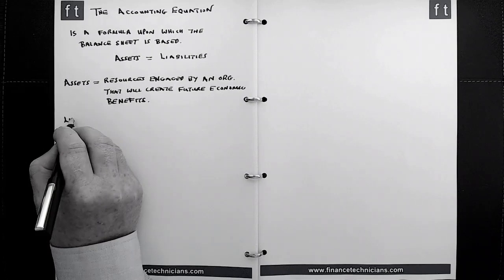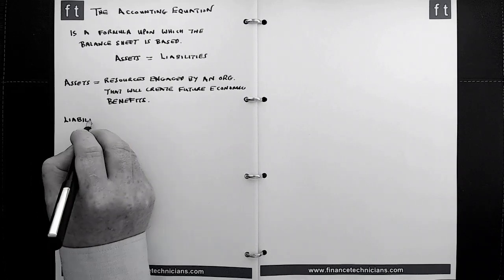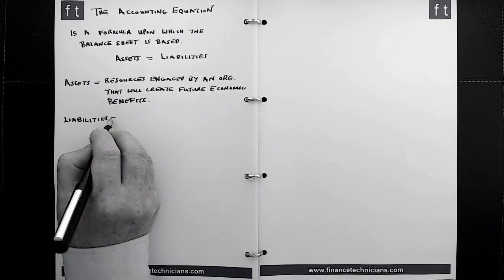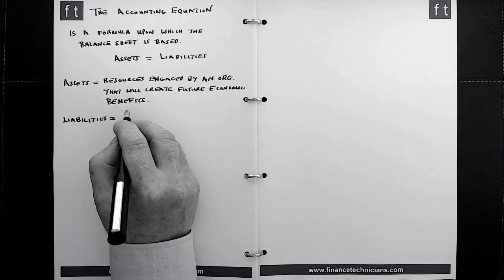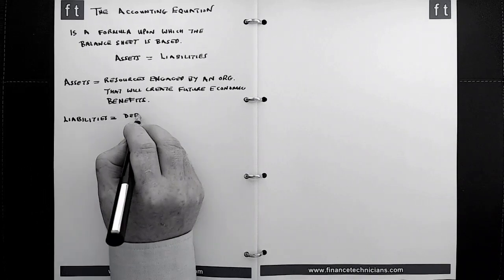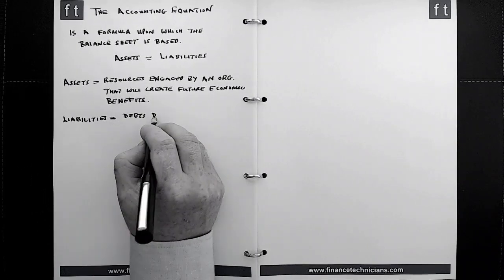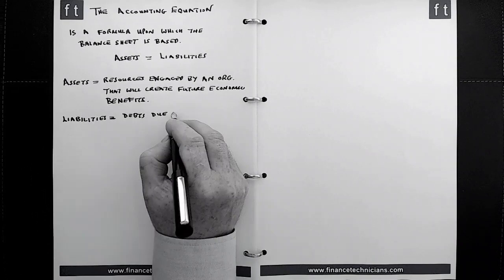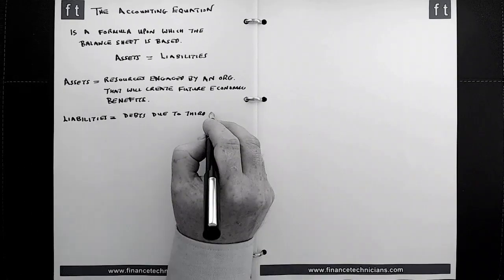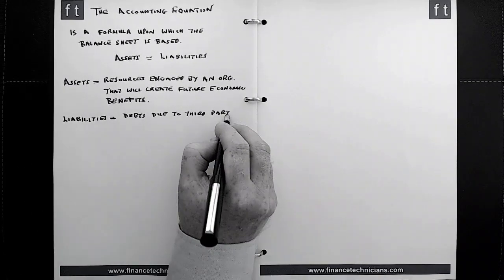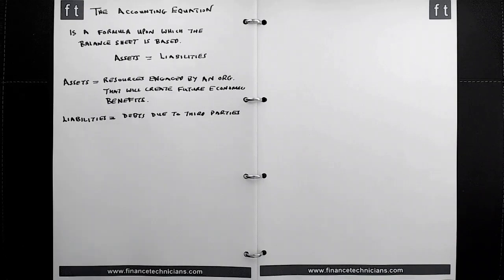What is a liability? So liabilities, at their most basic, are debts due to third parties. And we talk about debts due to third parties, we mean monies that are owed to third parties and at some stage in the future they need to be paid.